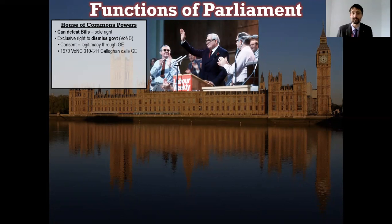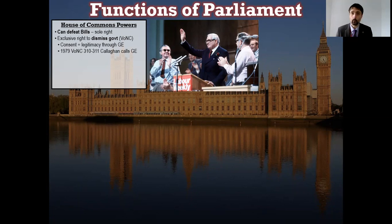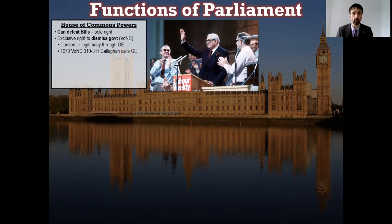The last time a vote of no confidence succeeded was in 1979, against Callaghan's minority Labour administration. They lost it 310 votes to 311. Callaghan said 'we shall take our case to the country,' went to a general election, which delivered the Conservatives under Margaret Thatcher. Several votes of no confidence were attempted in 2019 in May's government, but none succeeded. So 1979 remains the last successful example of the House of Commons sending a government packing.